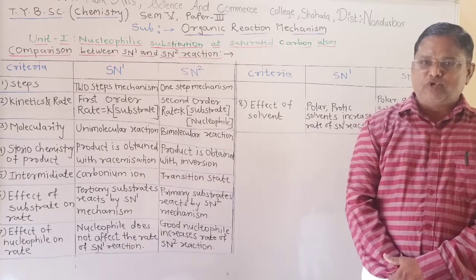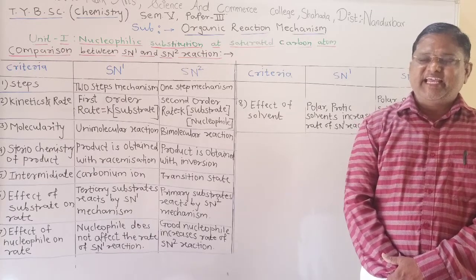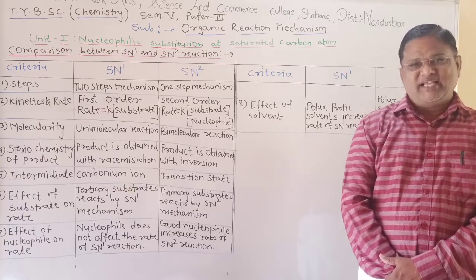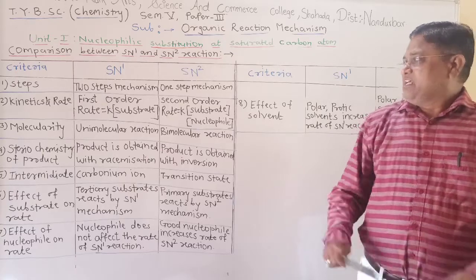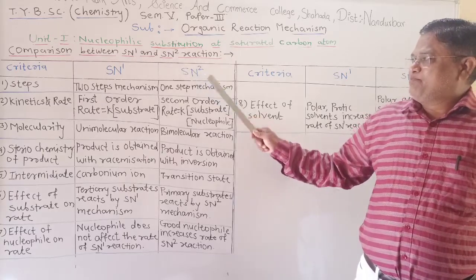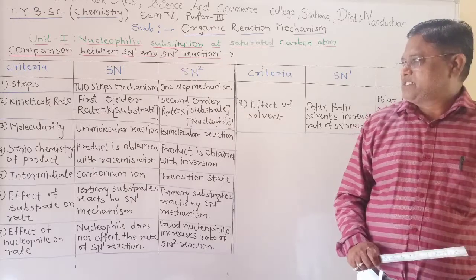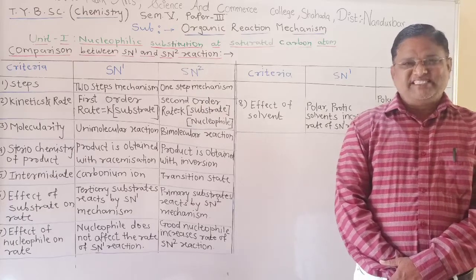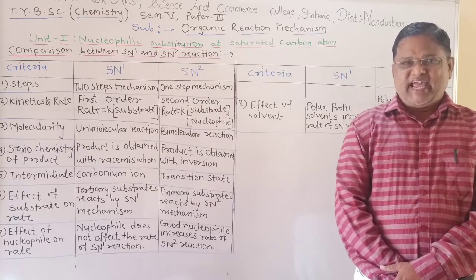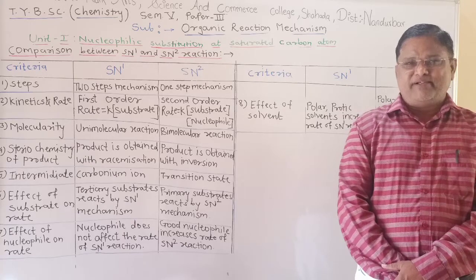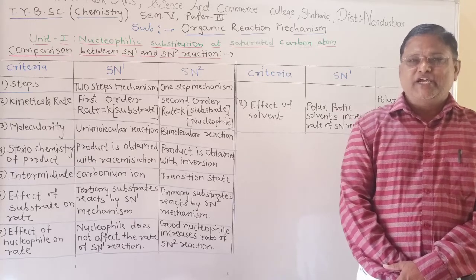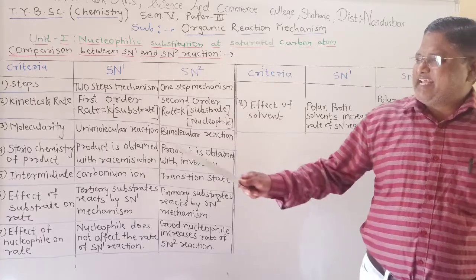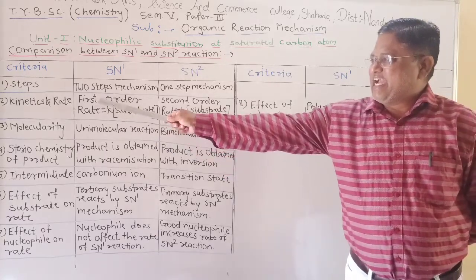In SN1 mechanism, in the slow step, a carbonium ion is formed, and in the fast step, the nucleophile attacks on the carbonium ion to form racemization. In case of SN2 mechanism, it takes place by only one step. In SN2 mechanism, the first step is the slow step, and in this step, a transition state is formed which breaks immediately to form 100% inversion of configuration.